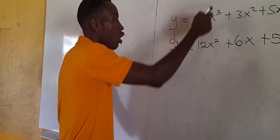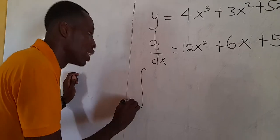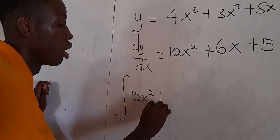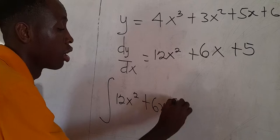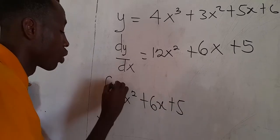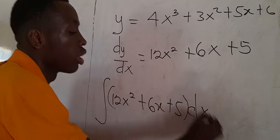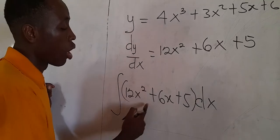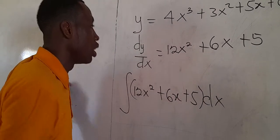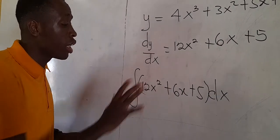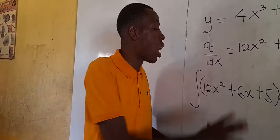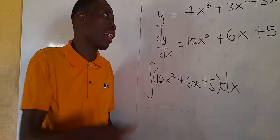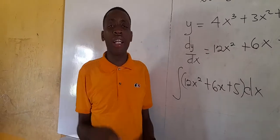Now we have the gradient — how can we get the equation of the curve back? We differentiated the equation of the curve to get the gradient. How can we get the equation of the curve back? We need to integrate. So to get the equation of this curve back, we integrate 12s² + 6s + 5 ds. We call this the integral of 12s² + 6s + 5 ds. Before this video ends, you will know how to integrate this and get the equation of the curve back.